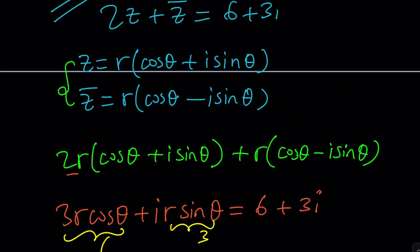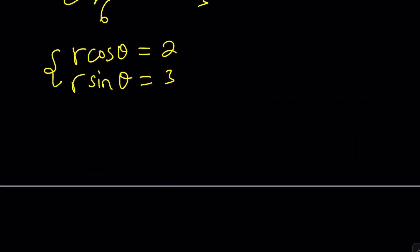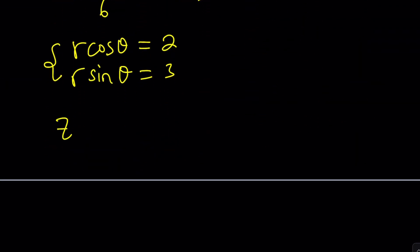Remember, Z could be written as r cosine theta plus i sine theta. So Z is r times the quantity cosine theta plus i sine theta. Of course, in this case, it's better if we distribute because we don't have cosine theta sine theta. We have r times those. So we can go ahead and just write it like this after distributing the r.